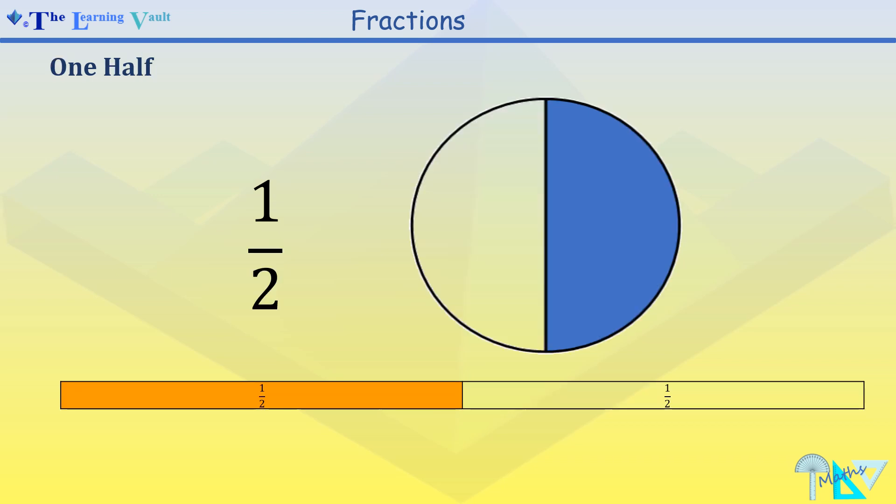These shapes represent a half. We have it in a circle form and a bar form.